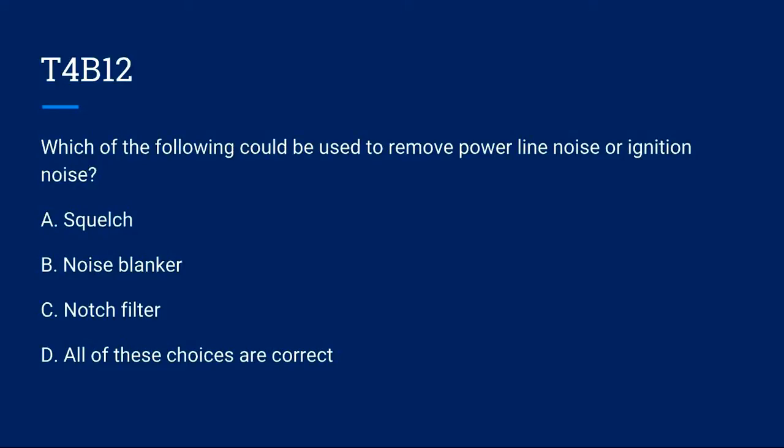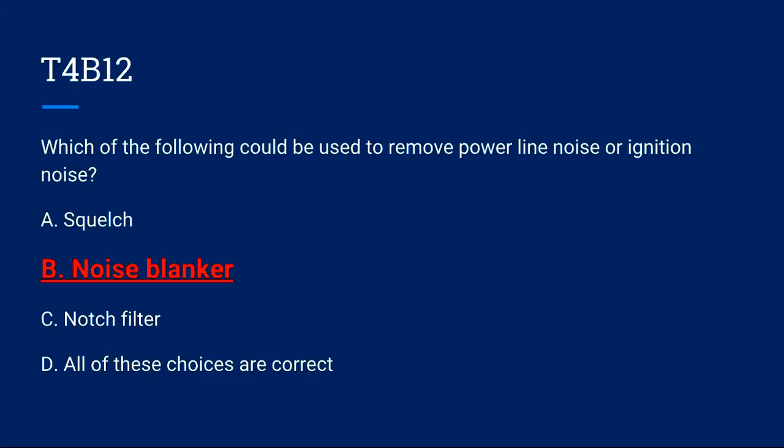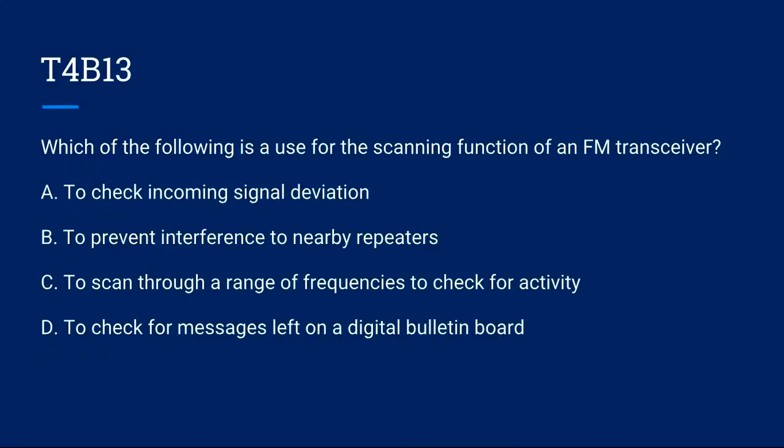T4B12: Which of the following could be used to remove power line noise or ignition noise? A. Squelch. B. Noise blanker. C. Notch filter. Or D. All of these choices are correct. Correct answer is B. Noise blanker.